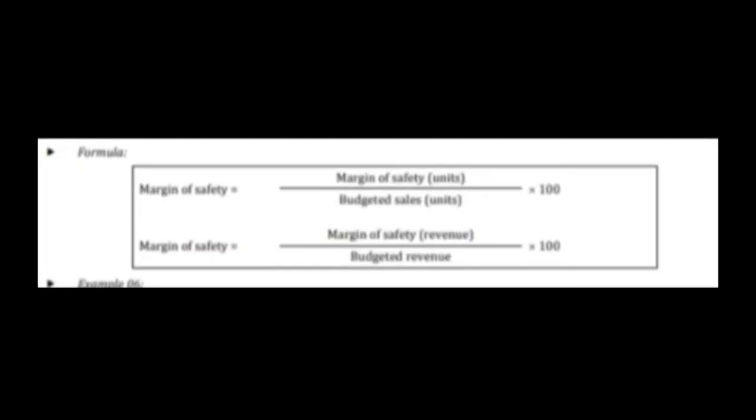To calculate margin of safety in units: divide margin of safety units by budgeted sales in units. Margin of safety is the difference between budgeted sales and break-even sales. Margin of safety as a percentage of revenue: (budgeted sales minus break-even sales revenue) divided by budgeted revenue, multiplied by 100.